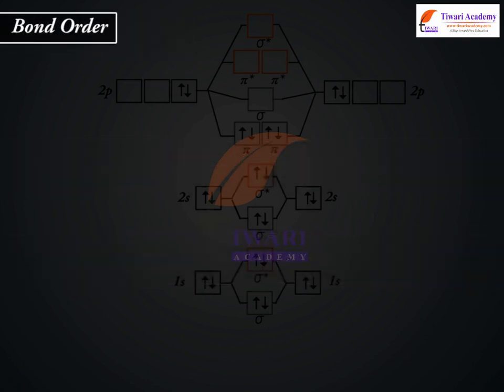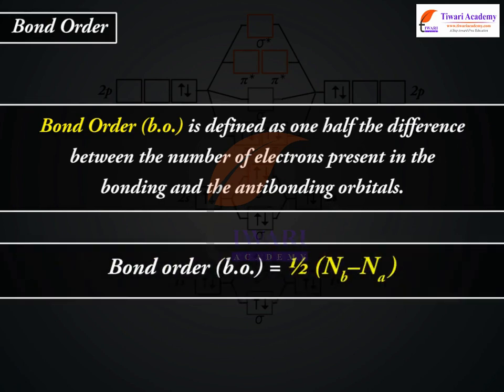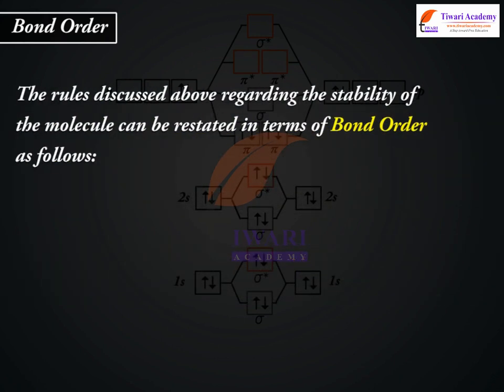Bond Order. Bond Order (BO) is defined as one-half the difference between the number of electrons present in the bonding and the antibonding orbitals. Bond Order BO is equal to 1/2 × (Nb minus Na). The rules discussed above regarding the stability of the molecule can be restated in terms of Bond Order as follows.